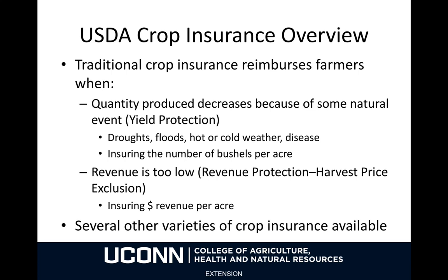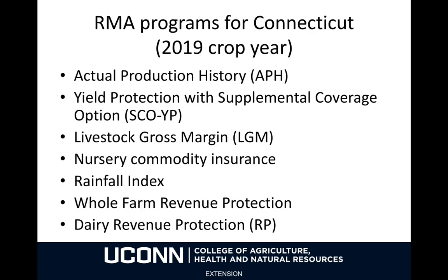There are several other types of crop insurance available. For Connecticut, for the 2019 crop year, which is about to begin, these are the types of insurance policies available: the actual production history policy, which is a yield protection policy; the yield protection with supplemental coverage option; livestock gross margin program; nursery commodity insurance; rainfall index programs for a few different commodities; the whole farm revenue protection program; and dairy revenue protection.